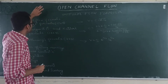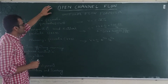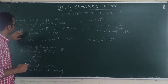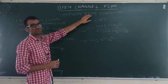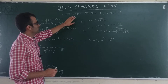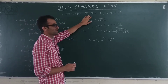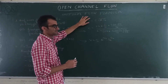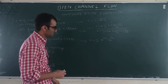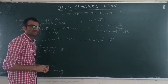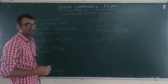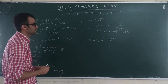We have seen what is the uniform flow. Today we are going to talk about the uniform flow formulas — how to compute the uniform flow. We will need some expressions for that, and those are called uniform flow formulas. Last time we saw that when the flow properties do not change with respect to space, then that flow is called a uniform flow.